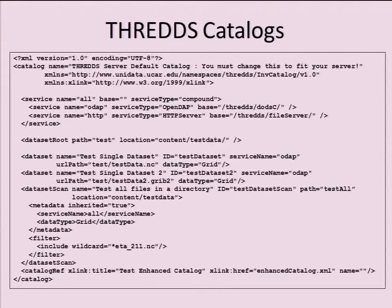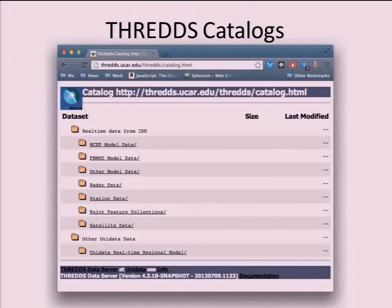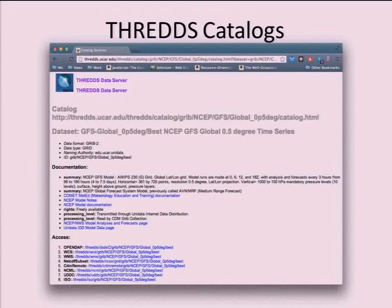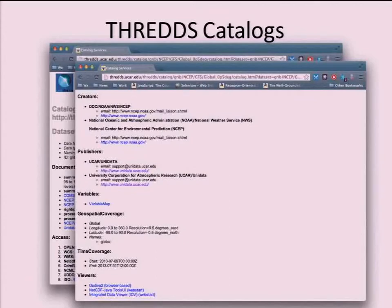Here's an example of a Threads catalog — it's just XML. It's got an HTML view of that XML, from our Motherload Threads catalog at Unidata. It's a hierarchy of data sets, like a virtual file system. You can point the Threads server to the top of your data directory and it will serve all of them. When you drill down into a specific data set, you see the various metadata and the different endpoints — possible ways of accessing that data set, including WCS and WMS.